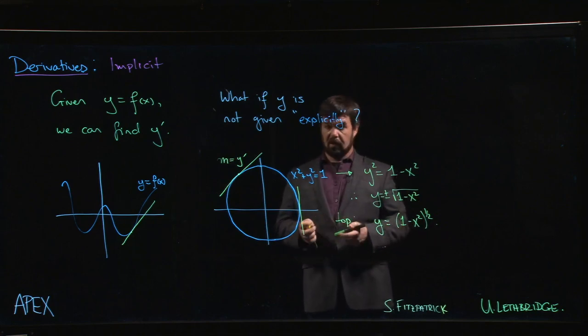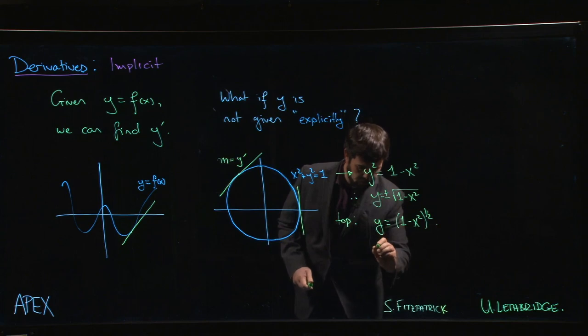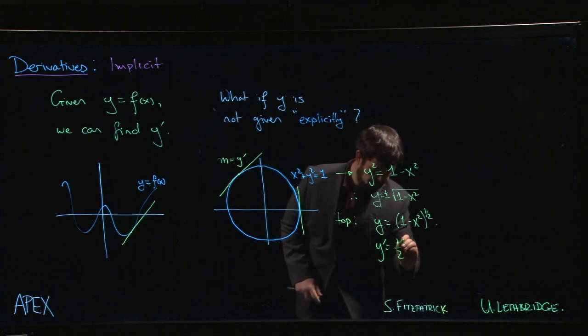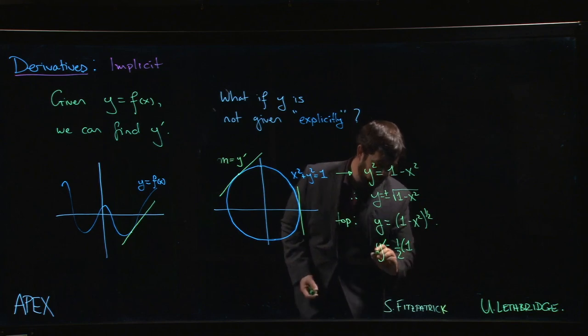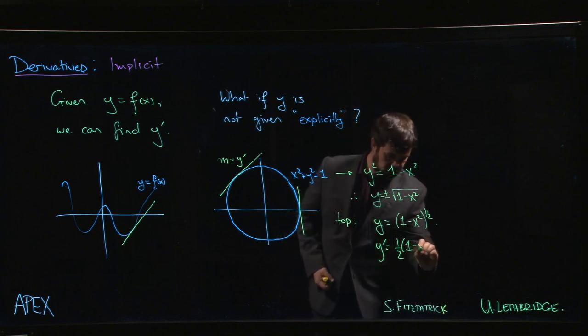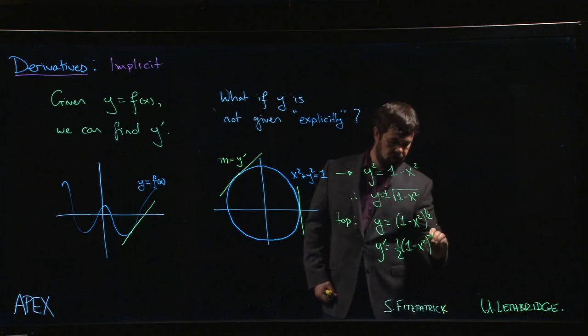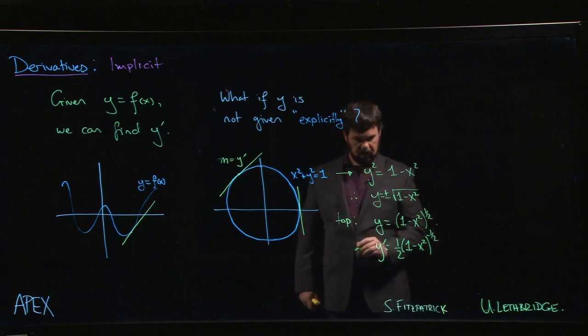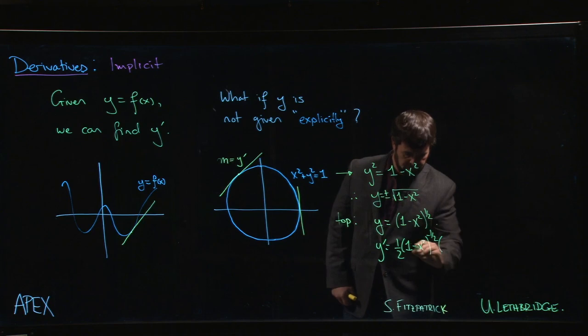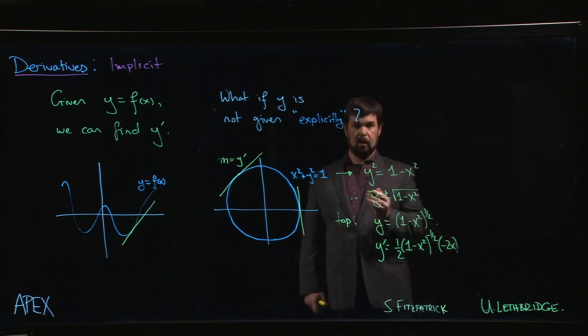So that means I know how to compute y prime. y prime is 1/2 times—also chain rule involved here, we need to leave the inside alone—(1-x²). 1/2 minus 1 gives me -1/2. Now I multiply by the derivative of the inside which is -2x.